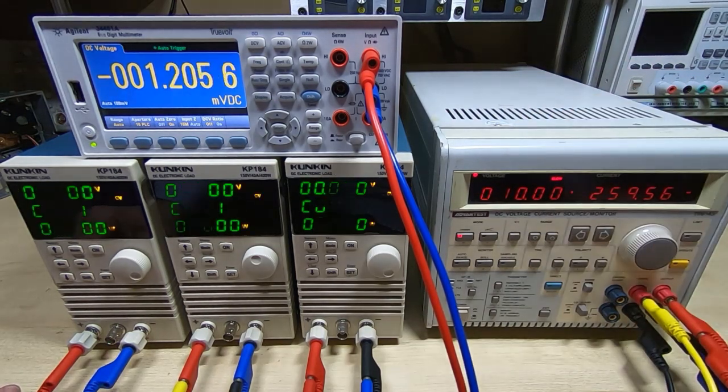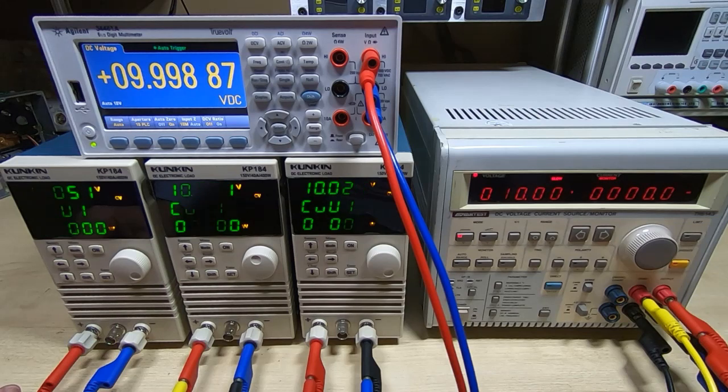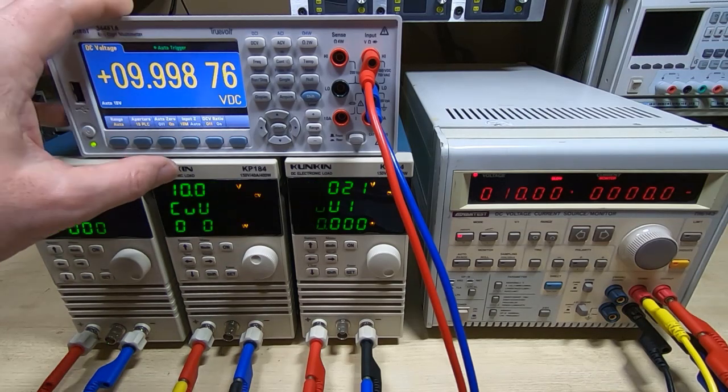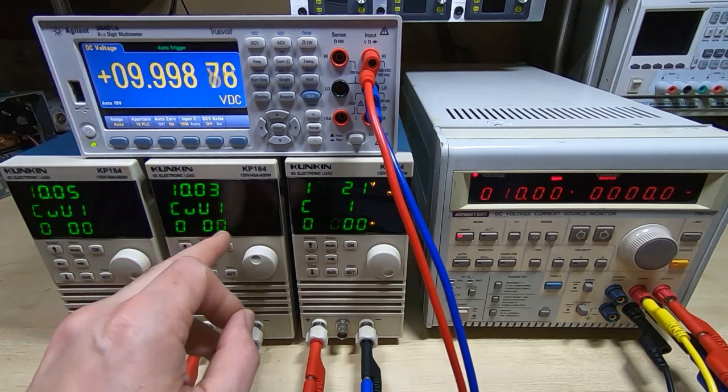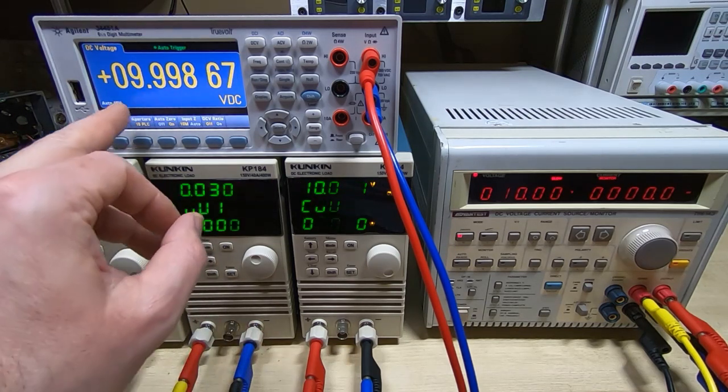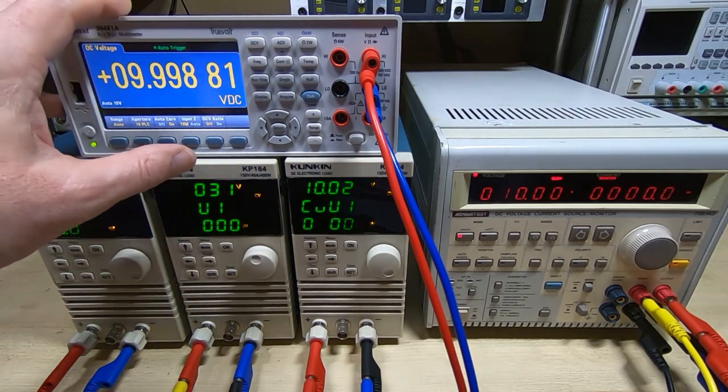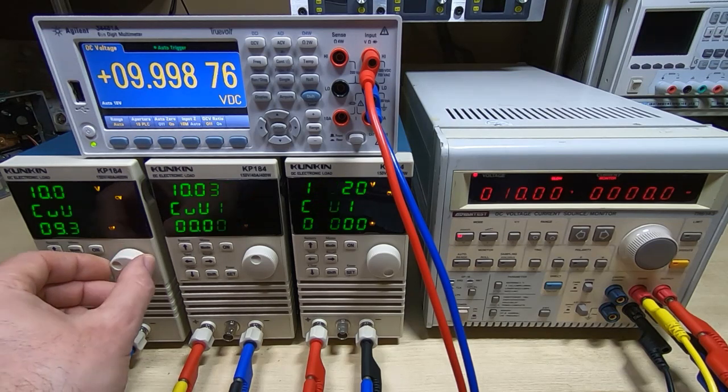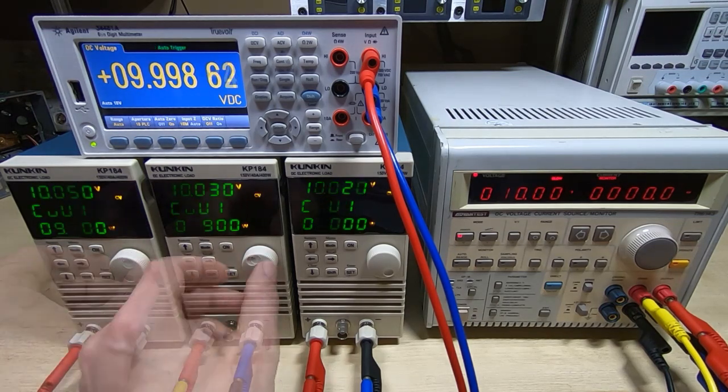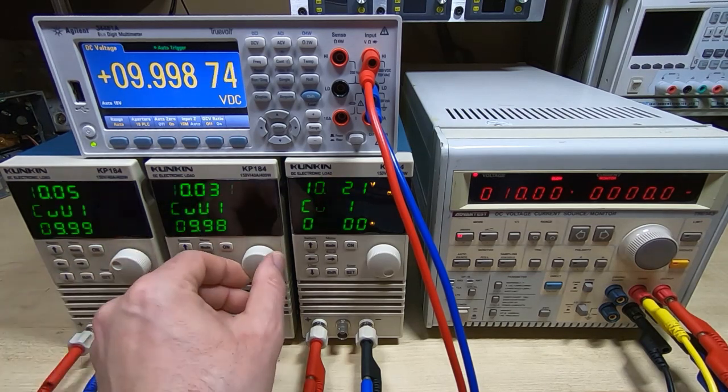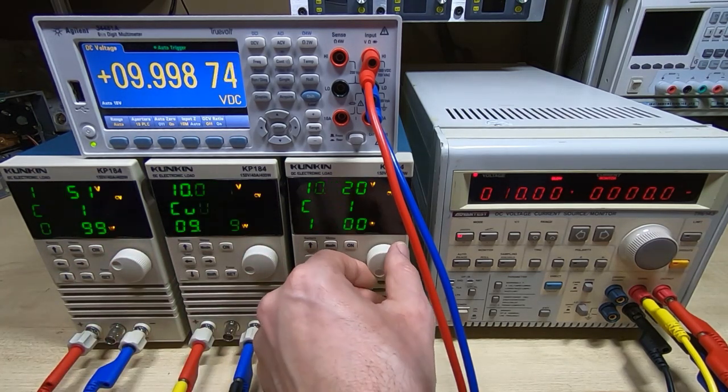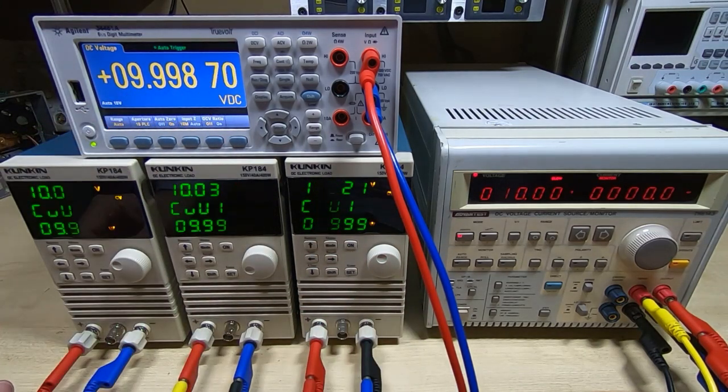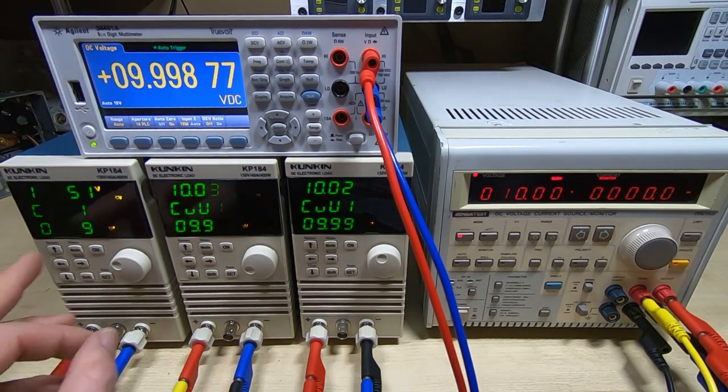We'll set 10 volts on the source, switch it on, and we can see we're getting the readings in the top line of the KP184 and very close to 10 volts. What we have to do is dial in on the bottom line of the KP184 the value we're actually measuring from our reference. So in this case it's 9.9998. What I've done is set them all to read as closely as I can the value that's shown on the Agilent. What you then do is press the set key.